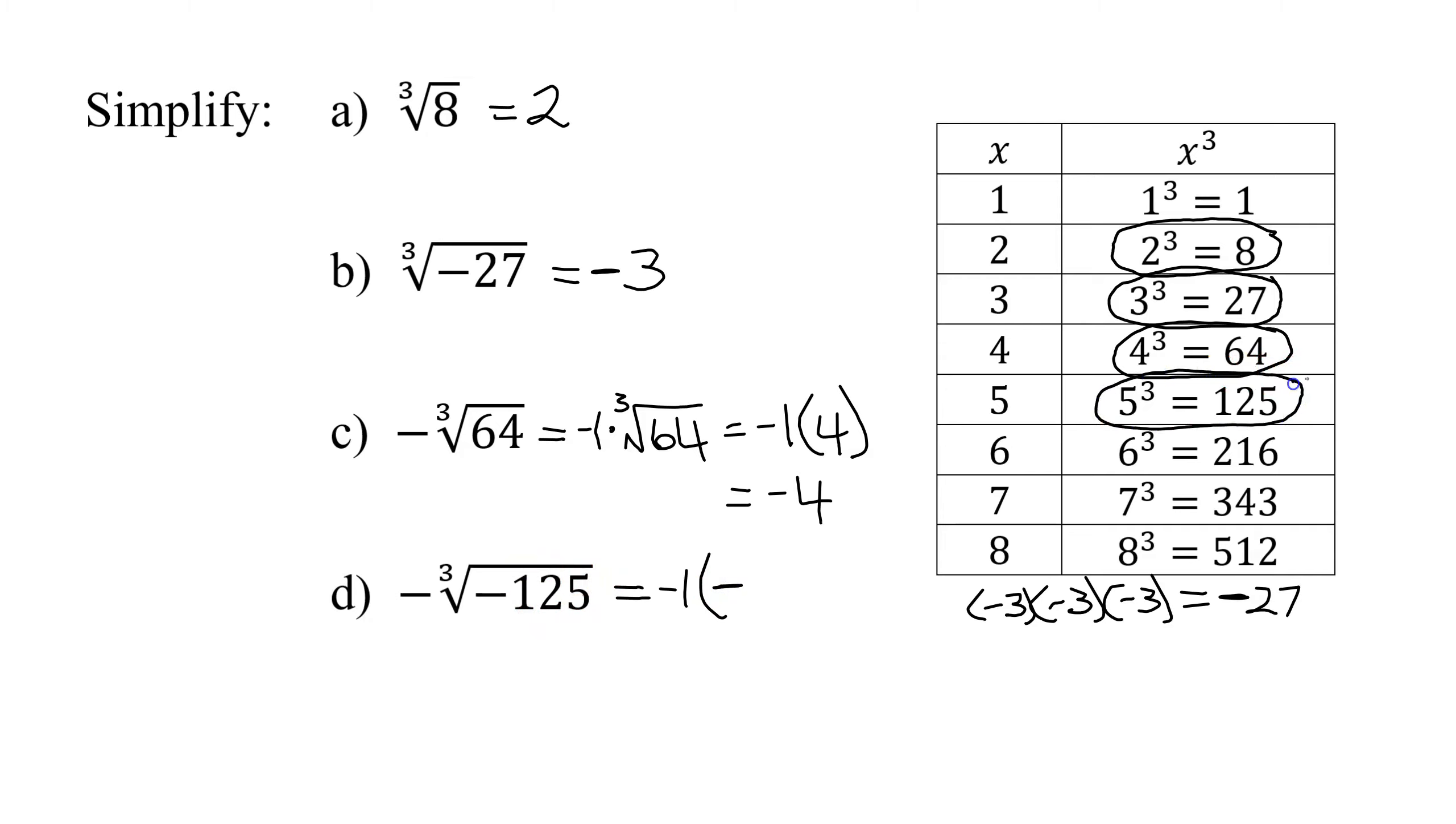Well, 125 is five cubed. So the cube root of negative 125 is negative five. So I have negative one times negative five. So the answer is positive five.